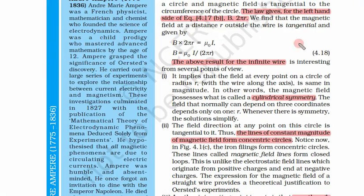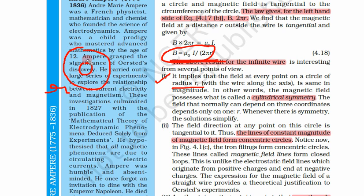Now we are familiar with the example. We know B = μ₀I / 2πr; this is from Ampere's circuital law. The above result for an infinite wire is interesting from several points of view. First, it implies that the field at every point on the circle of radius r — one was small, another was big, one was inside the radius, one was outside — the magnetic field formula shows that the field on any point of the circle is the same.